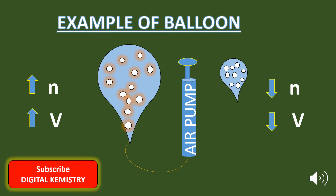Now look at the second balloon. Let's untie the balloon — the gas goes out. So the number of moles of gas decreases. The balloon shrinks and its volume also decreases. It means n decreases, which also decreases V. So when n, or the amount of gas, goes up, the volume also goes up. And when n, or the amount of gas, goes down, the volume also goes down. This is what we call a direct relationship. The more the gas in the balloon, the larger the volume; and the less the gas, the smaller the volume.